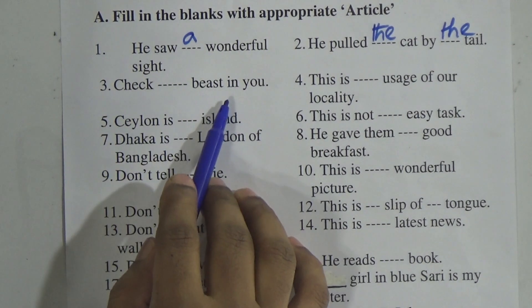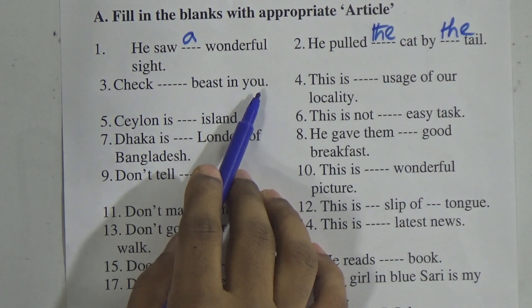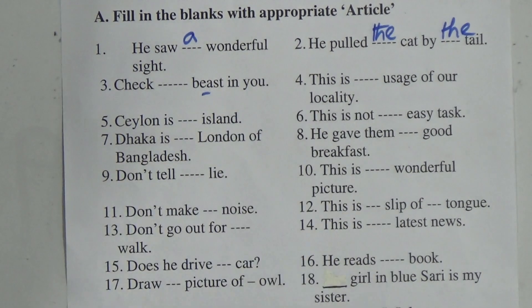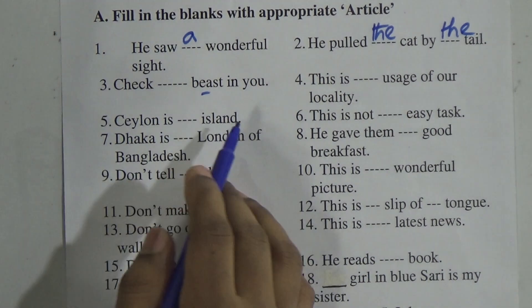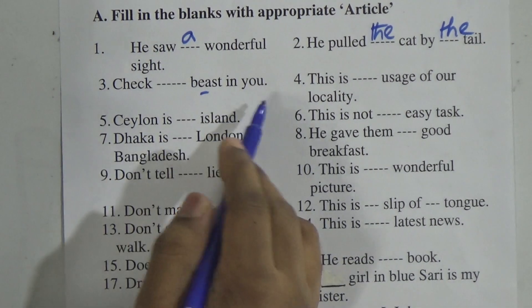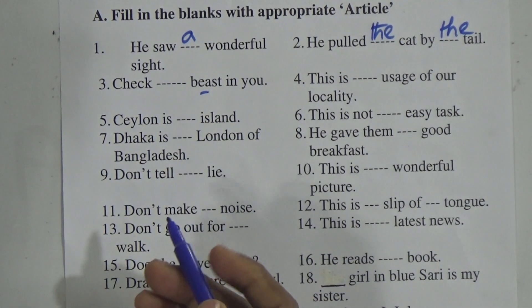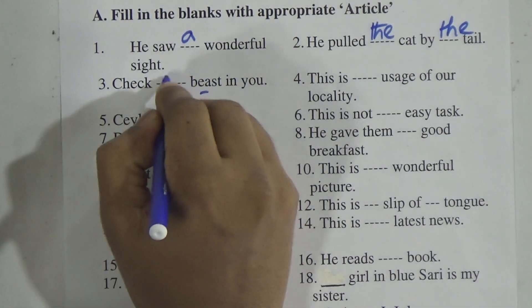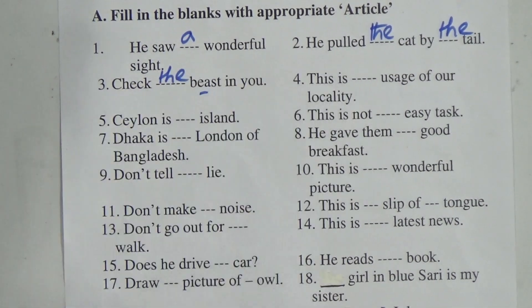Take the beast in you. 'Beast' is one kind of animal. Here 'beast' is specified and definite. So if anything is definite, we use 'the'.